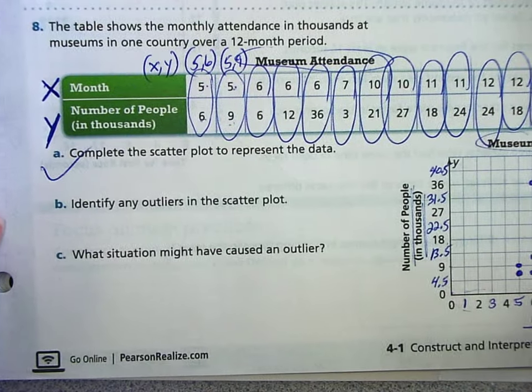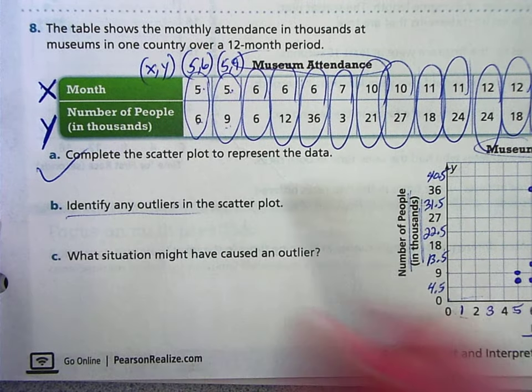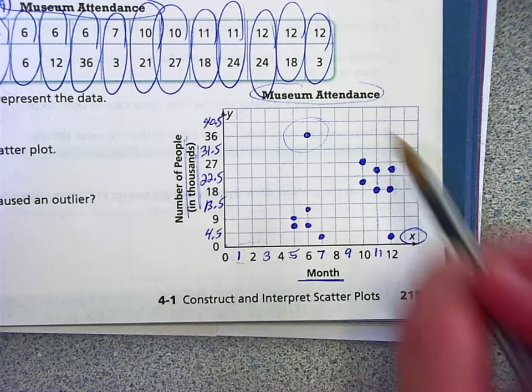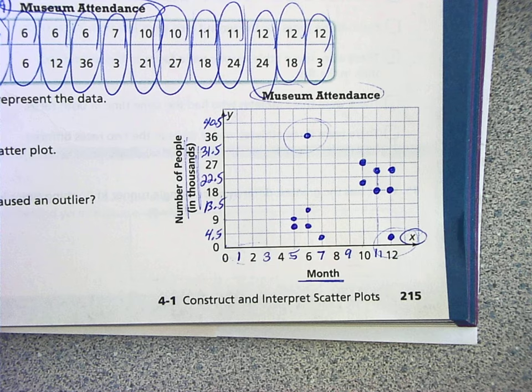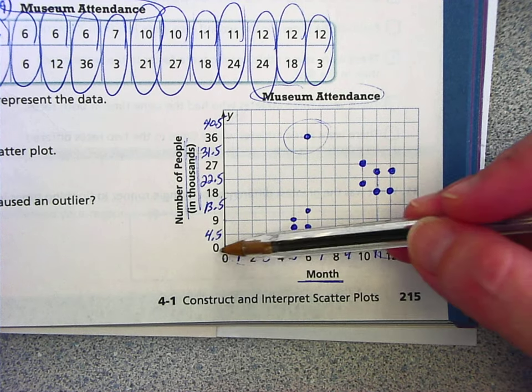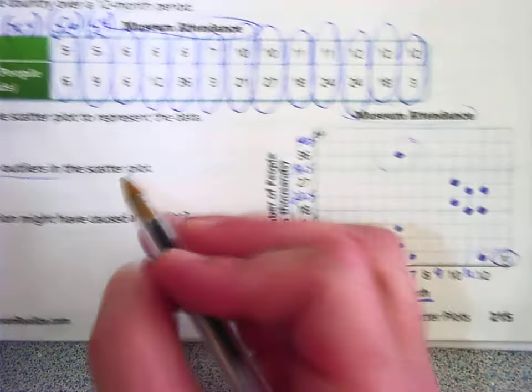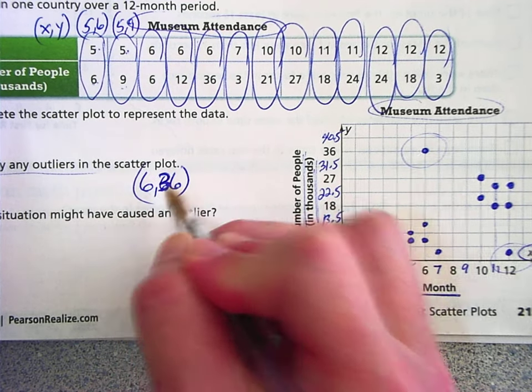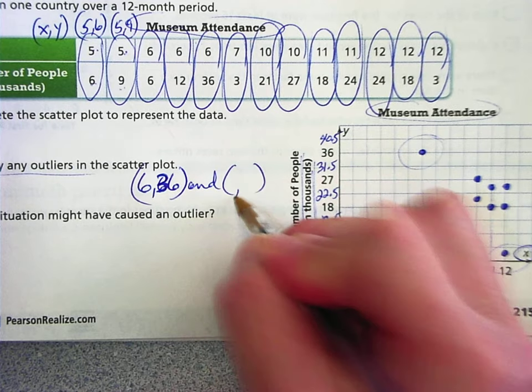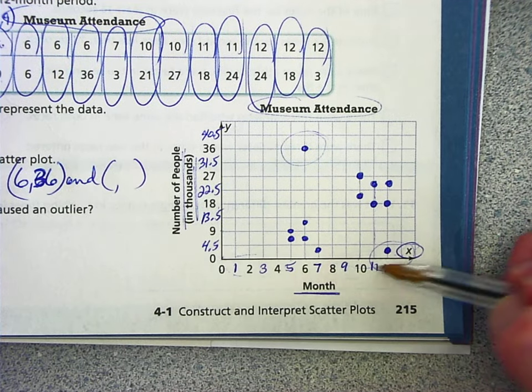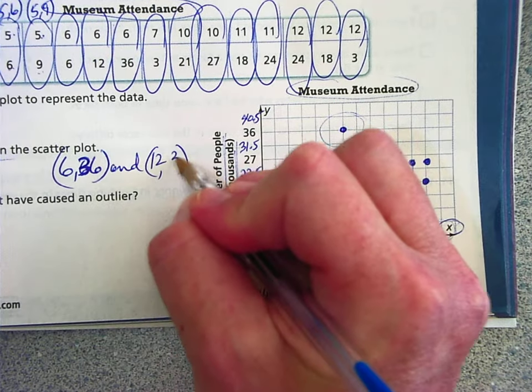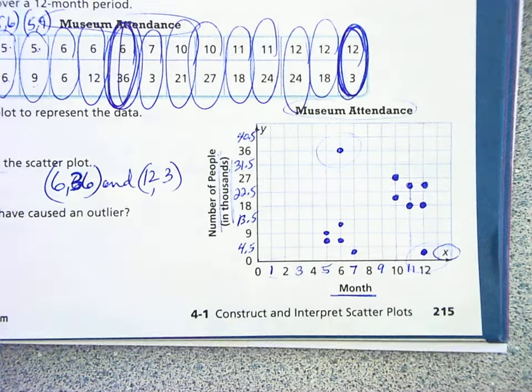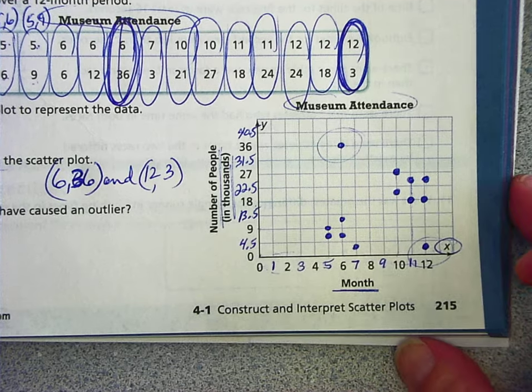So we did the first part. Now, we're going to identify any outliers. Okay. So remember, outliers don't fit with the rest of the data. So I would definitely say this is an outlier and this is an outlier. Let's name those ordered pairs. This would be 6, 36. So an outlier would be 6, 36. And this one would be 12, 3. So it's 12, 3, and 6, 36. Those are our two outliers. They don't fit with the rest of the data.